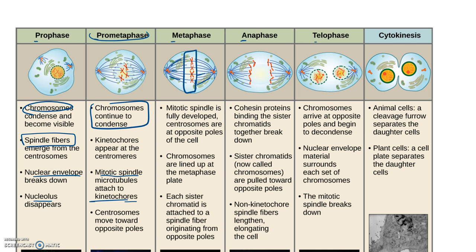In anaphase, what you'll notice is the sister chromatids have separated. They're no longer attached, and now they are sister chromosomes. So when they're attached together, each arm is called a sister chromatid. Once they're separate, now they are sister chromosomes. Now the spindle fibers are actually moving those sister chromosomes to opposite poles or opposite ends of the cell.